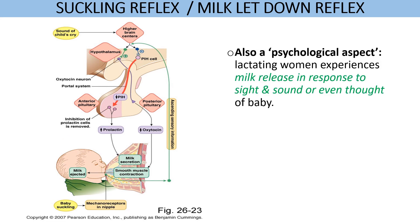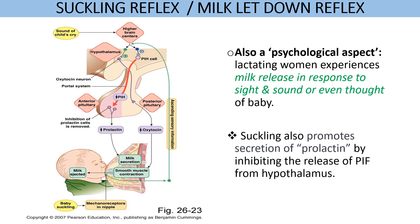Even stimuli like the sight, sound, thought, or cry of an infant can cause milk ejection in a postpartum female. This shows that there is a psychological aspect present in lactation. Suckling also promotes secretion of prolactin by inhibiting the prolactin inhibitory hormone from the hypothalamus.